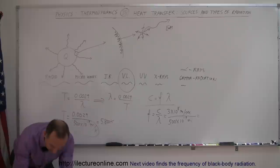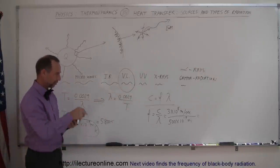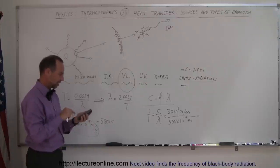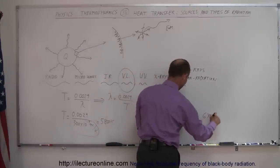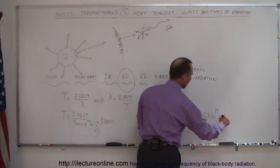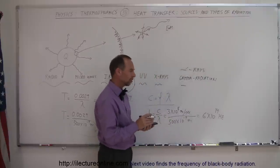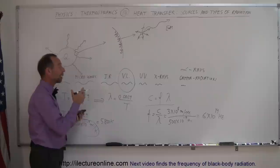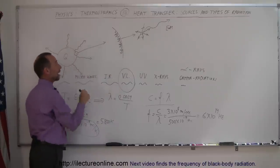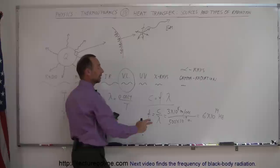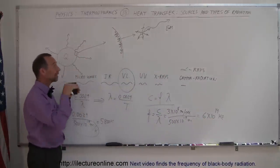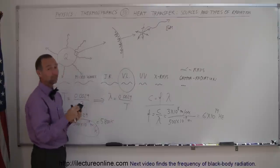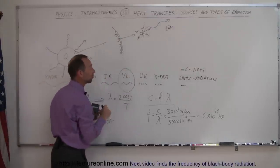Calculating this — 3 × 10⁸ divided by 500 × 10⁻⁹ — we get a frequency of 6 × 10¹⁴ hertz. That is 600 trillion hertz. In other words, the atoms in an object that emit visible light oscillate at 600 trillion times per second, and the electromagnetic radiation emanating from that object also oscillates at 600 trillion times per second, because the frequency of the radiation matches the frequency of the atomic oscillations. That's how electromagnetic radiation is produced.